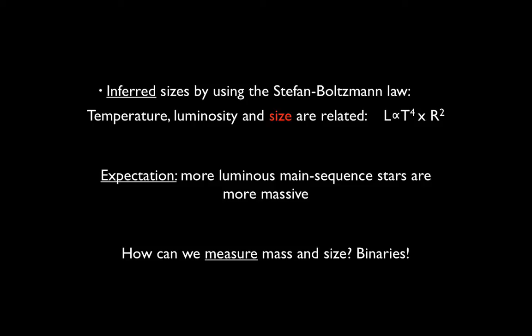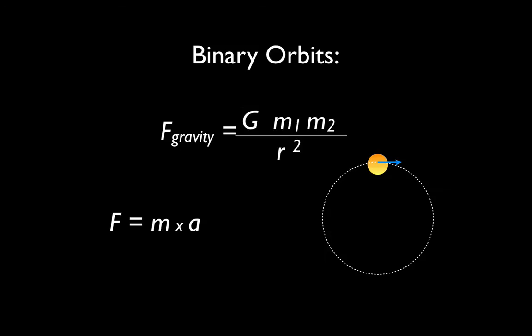How can we do this? How can we measure directly mass and size of stars? The answer is in binaries. When two stars orbit each other, their motions are governed by gravity. This means that by observing how fast they move, we can deduce the amount of gravitational force they must be subject to, and we can therefore deduce the mass of the two stars.